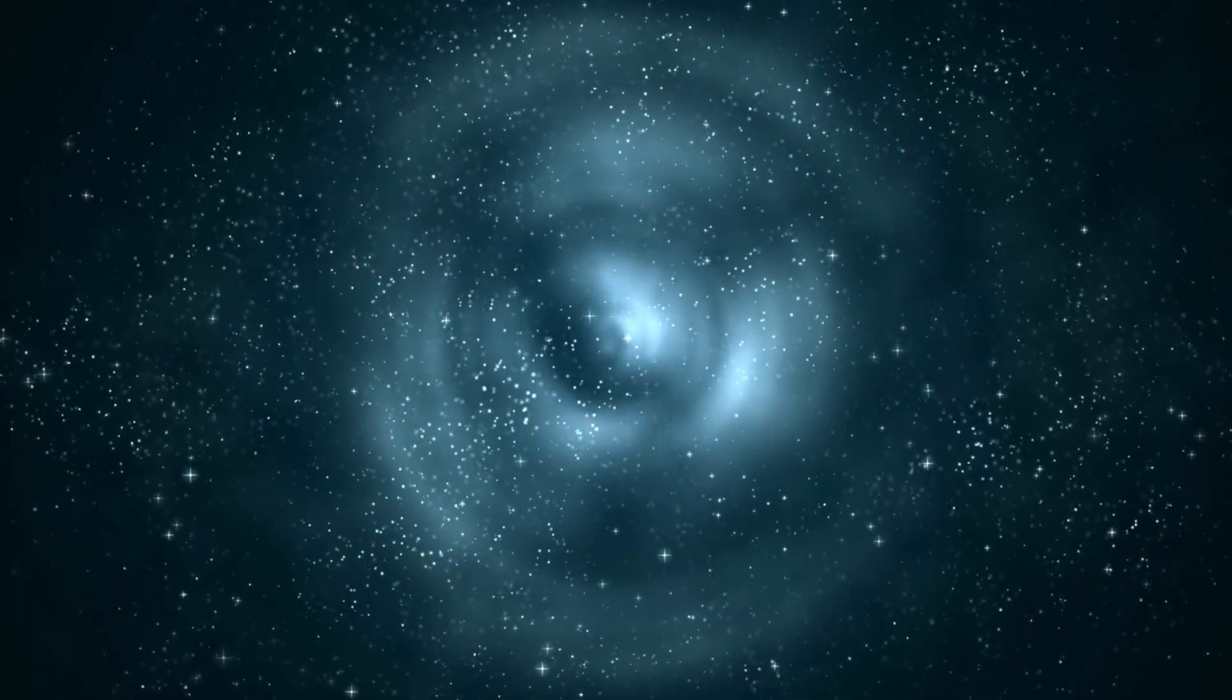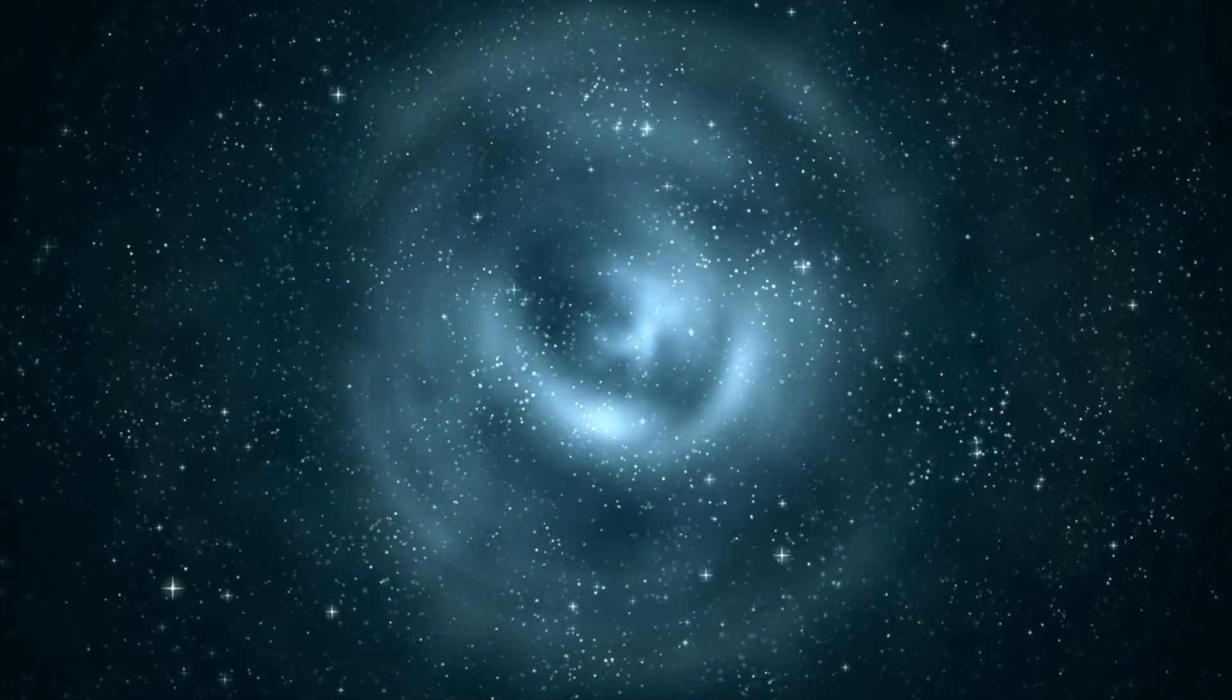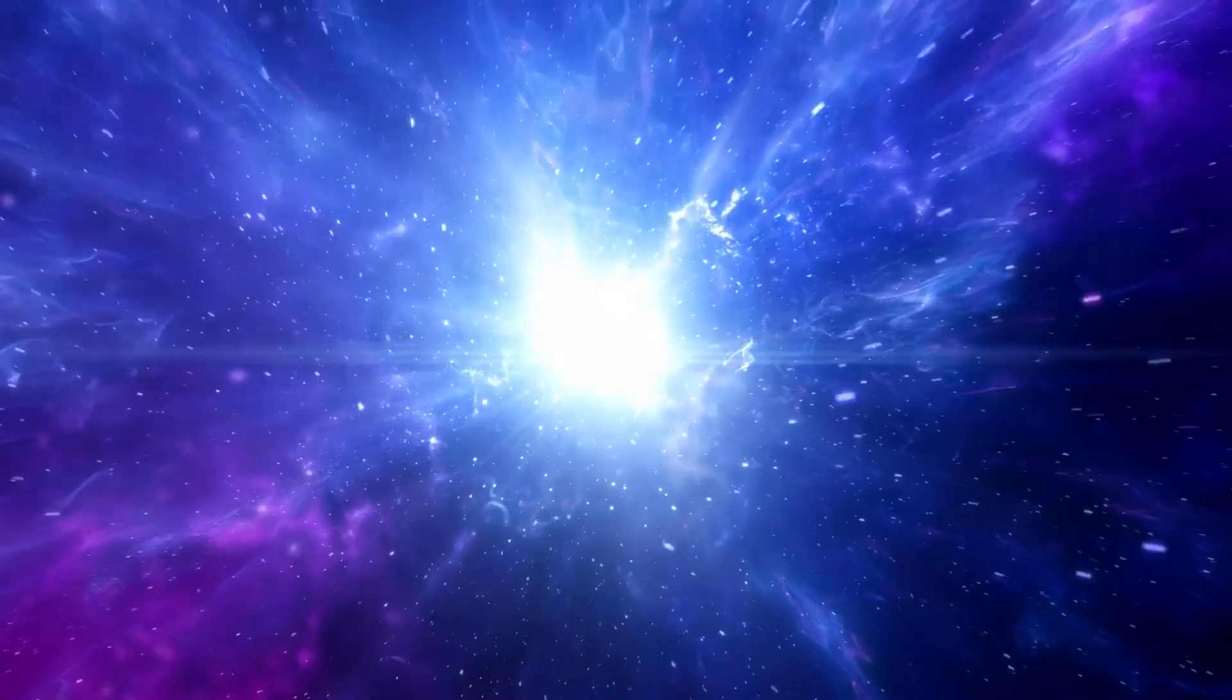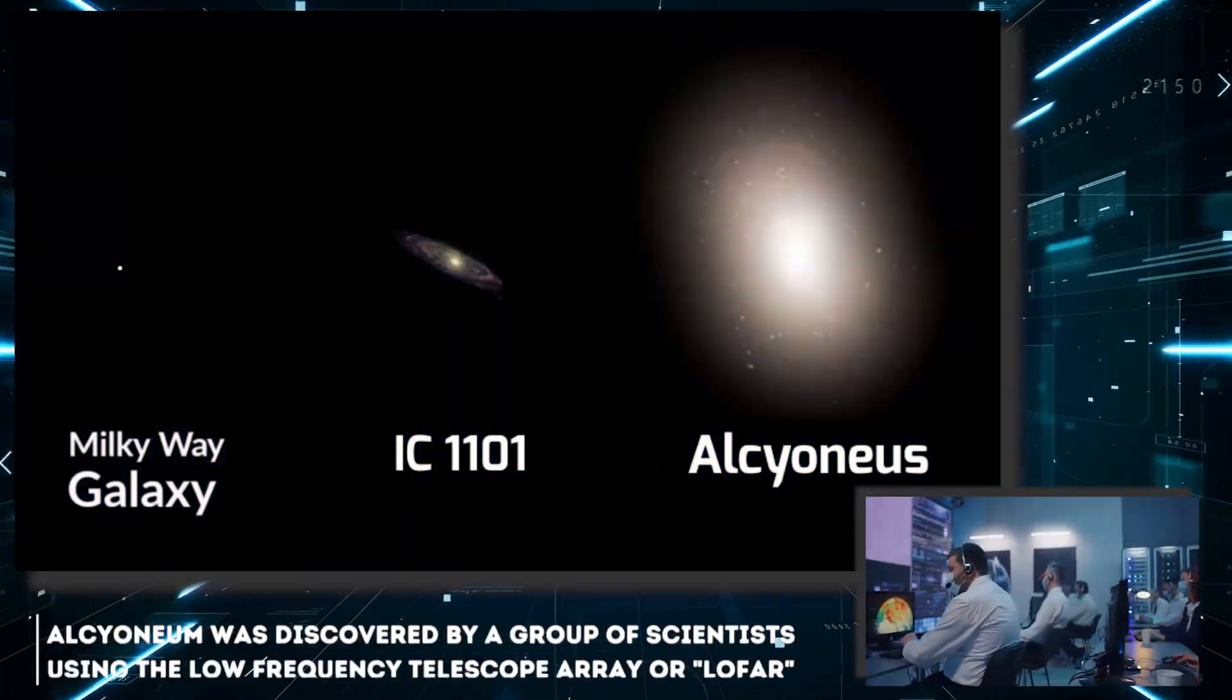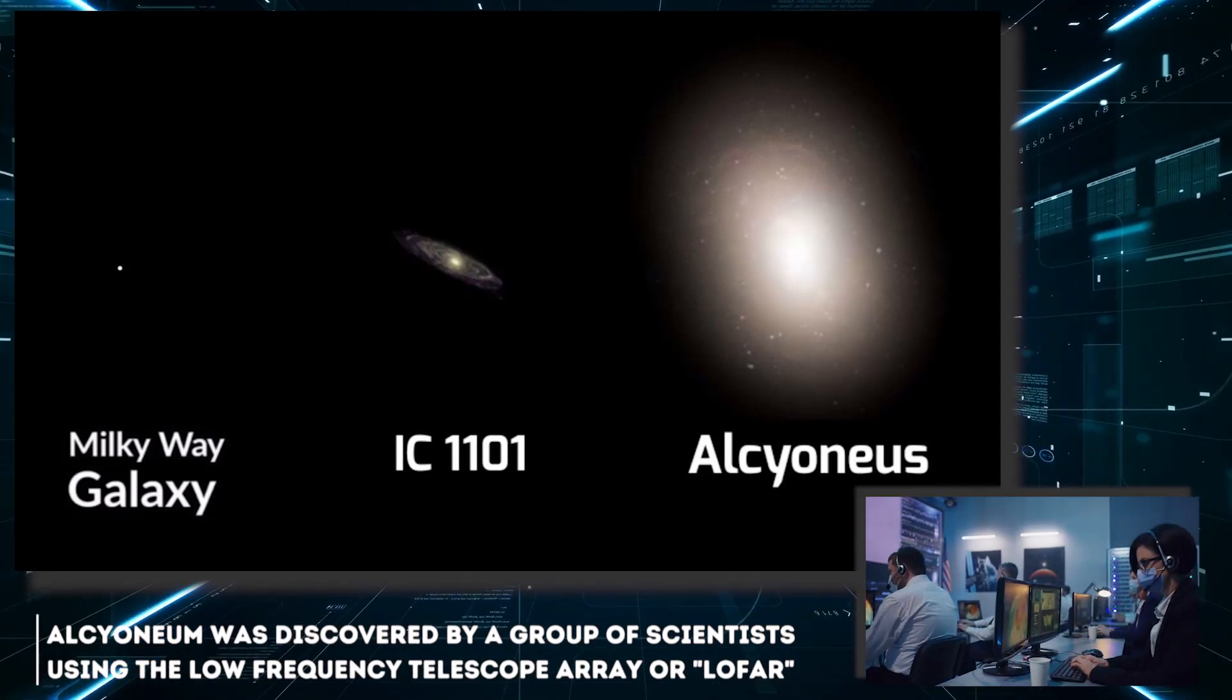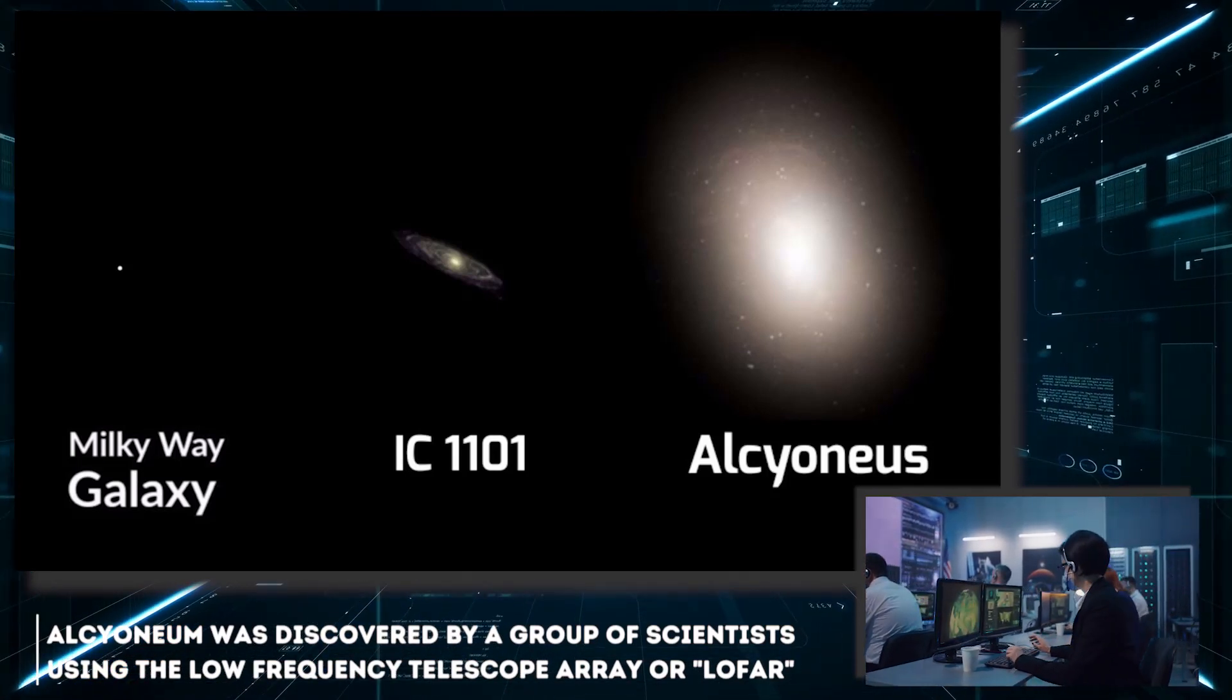Simply put, the galaxy is an ecosystem in itself where a constant cycle of creation and destruction is repeated and respected. At the time, Alcinean was discovered by a group of scientists using the Low Frequency Telescope Array, or LOFAR. This is an array of variable frequency telescopes spread across Europe.